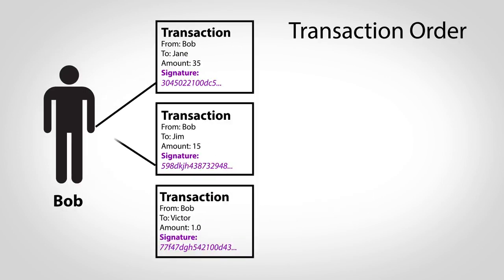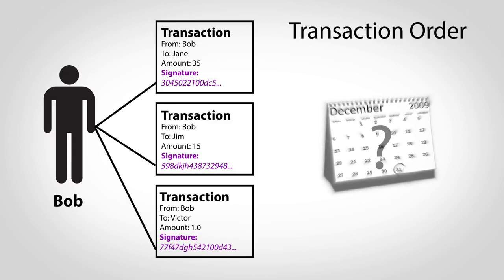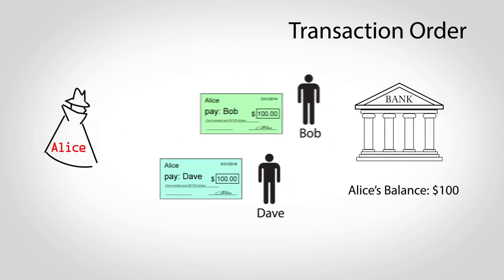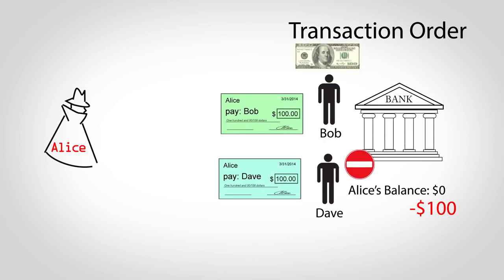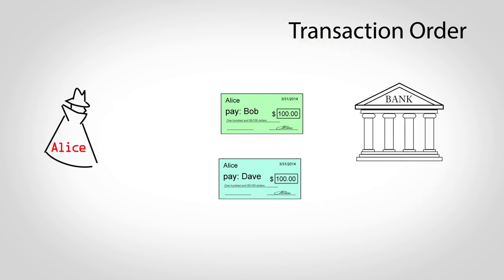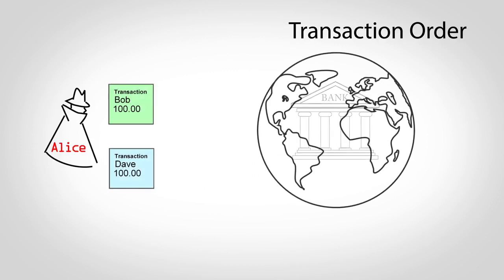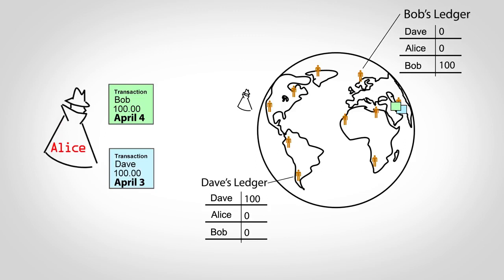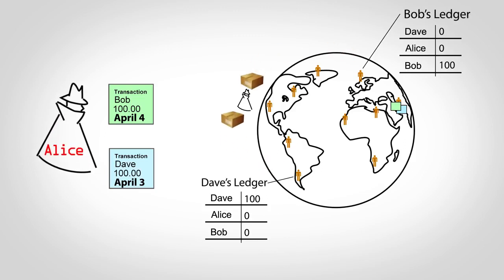While the mathematical signatures prove who sent a transaction, they can't prove when it was sent, and this turns out to be problematic. In our traditional banking system, if Alice wrote two checks but only had enough money to cover one of them, the bank would pay the first person attempting to cash their check but refuse the second, because Alice's account would be empty. So the order of these checks is critical, because it determines who should get paid. Unfortunately, order is much harder to determine in Bitcoin, where instead of a single bank there are individuals all over the world. Network delays might cause transactions to arrive in different orders in different places, and fraudsters could lie about timestamps. Two recipients might both think their transaction is first and ship a product, effectively allowing Alice to spend money twice.